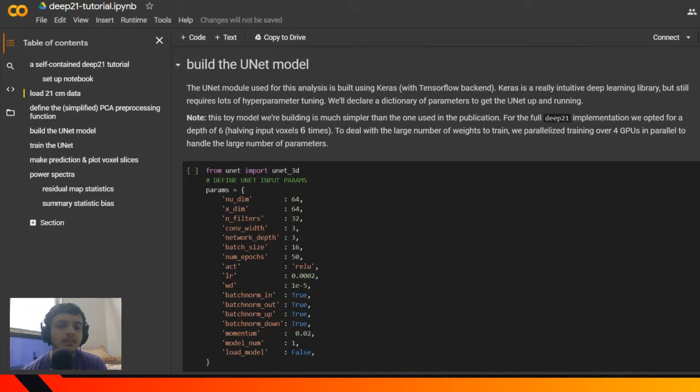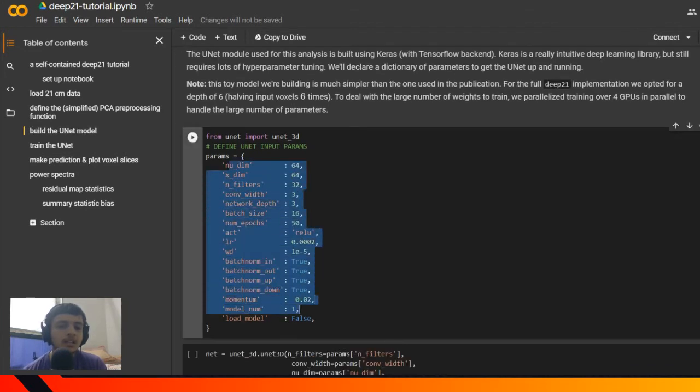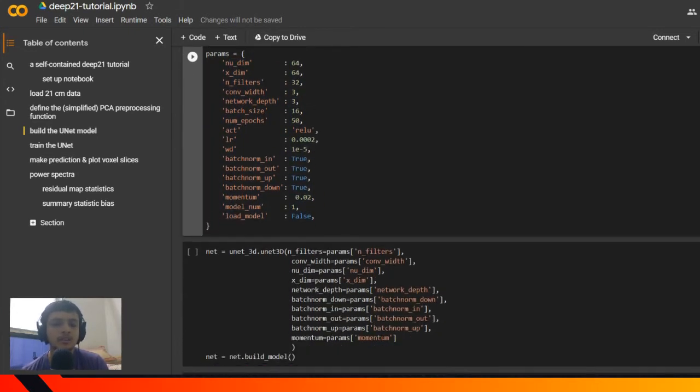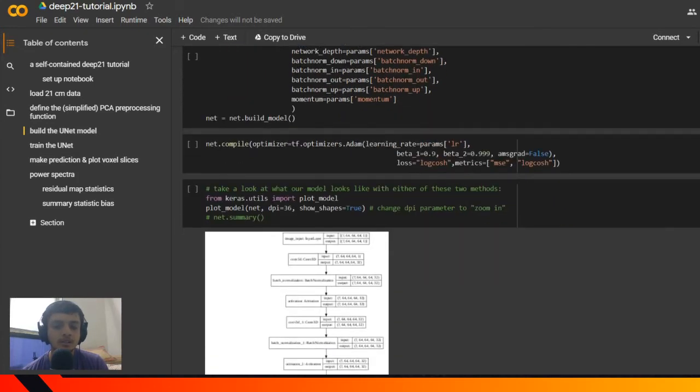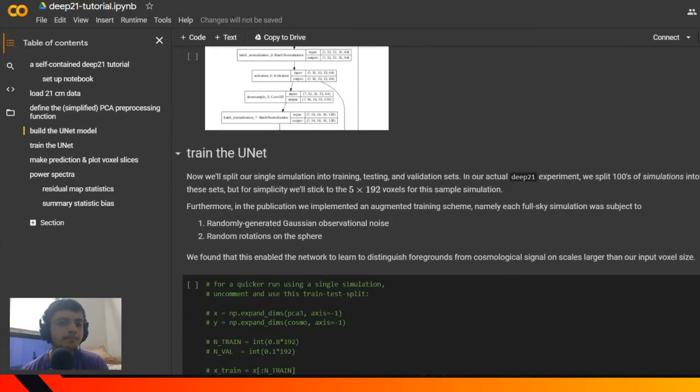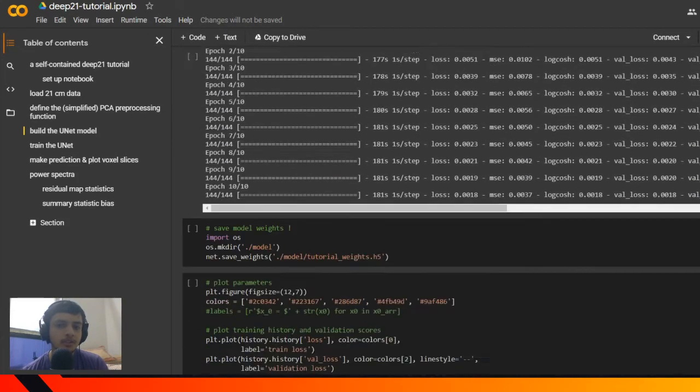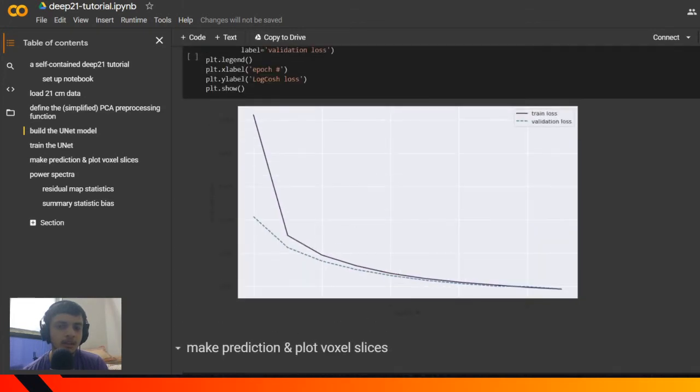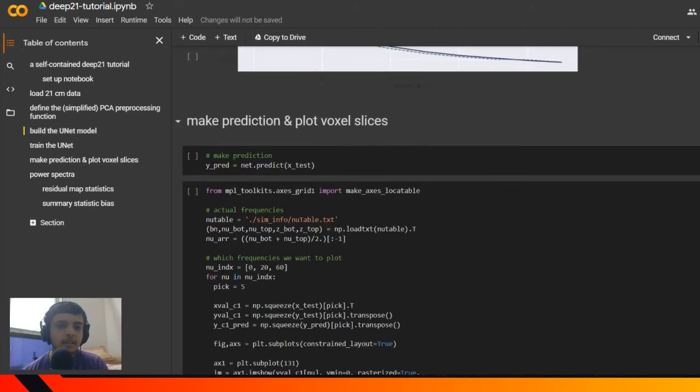Now they build this U-Net function and define all the parameters - maybe they're going to do hyperparameter tuning. They train the network over a lot of epochs, save the model, and then plot the loss, training loss and validation loss, showing that the model is converging on the given dataset.